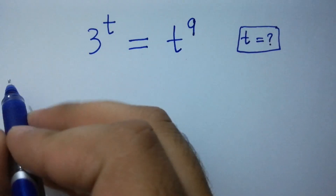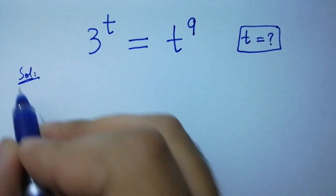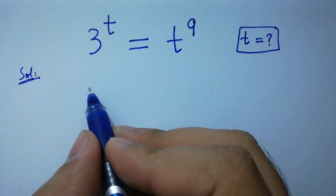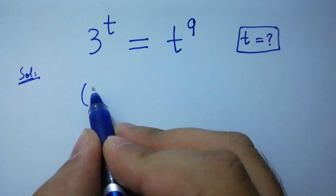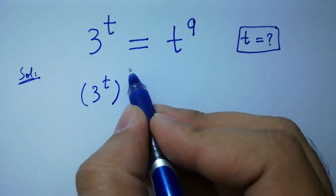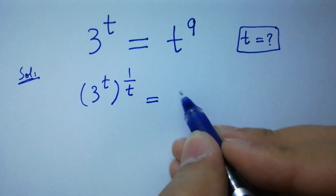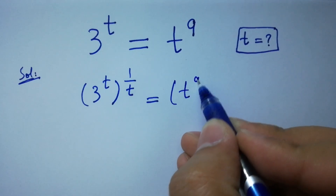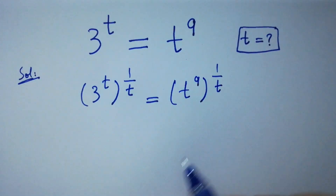Let's have a solution. To solve this, take power 1 over t on both sides. So we have 3 to the power 1 over t, to the whole power 1 over t, equals t to the power 9, to the whole power 1 over t.